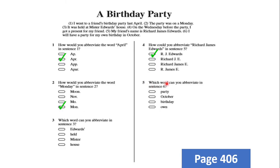Number five — do it on your own. It's very, very easy. You will look for the word that you can abbreviate. Which word can you abbreviate from this sentence? 'I will have a party for my birthday in October.' That's all for grammar class. Thank you.